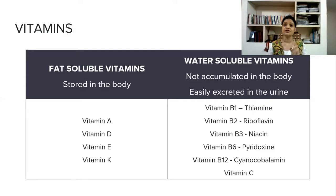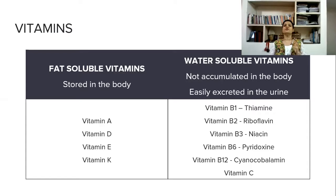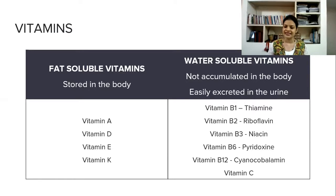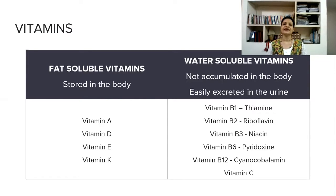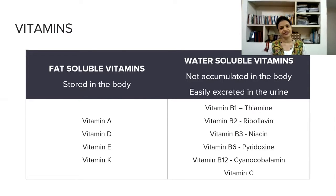Very important — fat soluble vitamins get stored in our body. So if an excessive amount of these fat soluble vitamins gets stored in our body, it may cause toxicity, which we call hypervitaminosis. This word you should remember — they may ask you in your exam. Water soluble vitamins, as the name suggests, get easily dissolved in water and are not accumulated in our body — they can be easily excreted in the urine.